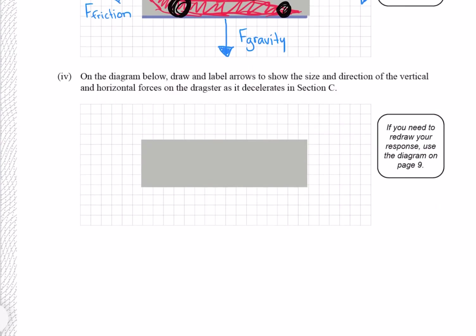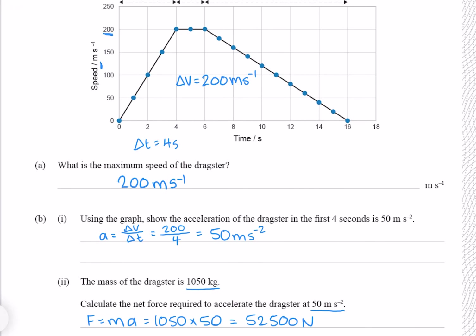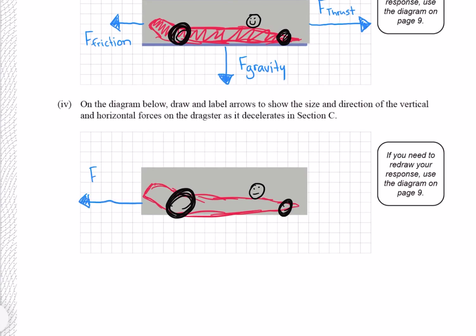We're now asked to do the same for section C. Let me substitute our dragster again. If we scroll up to section C, we see that the speed of the dragster is decreasing, which means that the backwards force, the drag force or the friction force, must be greater than the frontwards thrust force, opposite to our previous question. And our vertical forces will be the same as the previous example, equal and opposite.